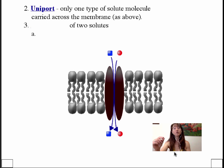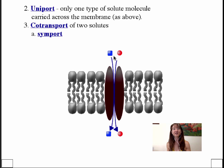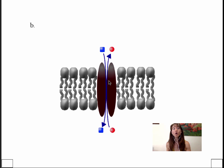But oftentimes we see situations where more than one solute will move through the transporter. Either they'll move concomitantly — that is, two of them together will move into or out of the cell — and we call that a symport. So if the square molecule and the round molecule move into the cell together, we recognize this as a symport. We can also see co-transport in the opposite direction — an antiport — where the square molecule moves in while the round molecule moves out.